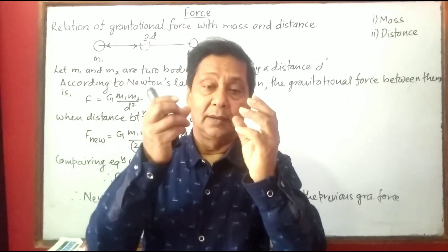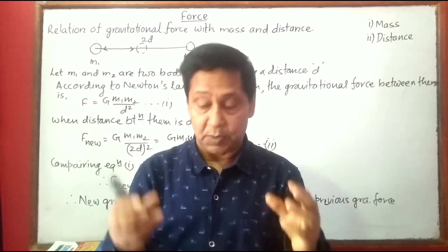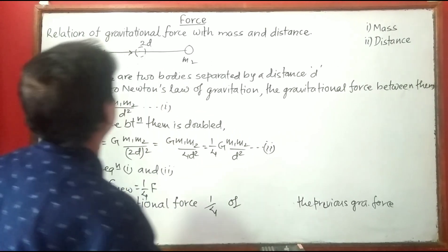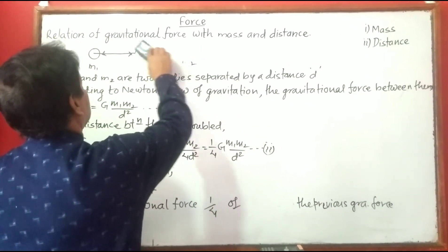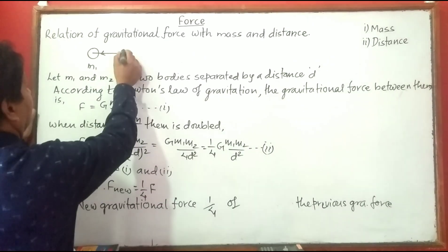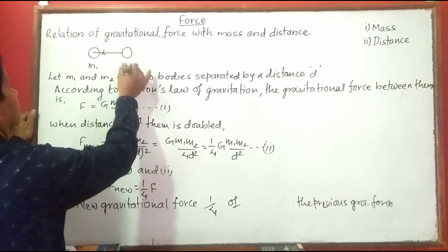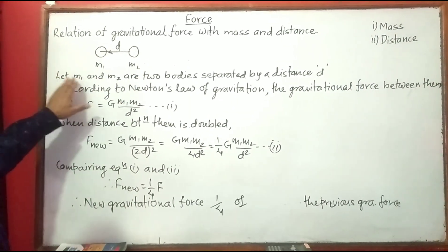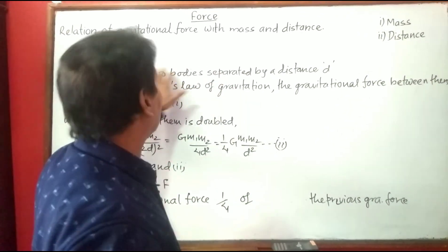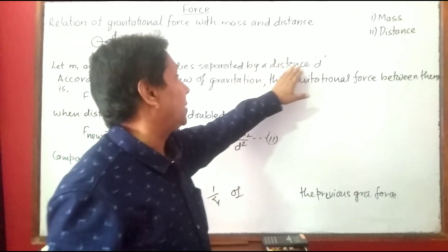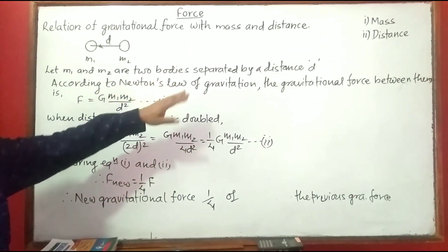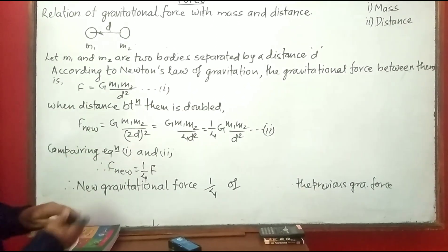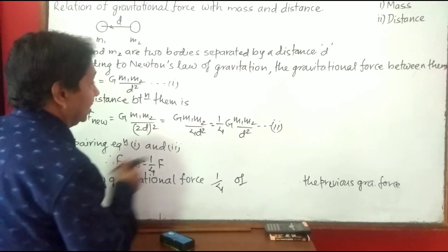Next: what will be the change in gravitational force between two bodies when the distance between them is halved? If the distance between them is reduced to half, then they come close to each other. Let m1 and m2 are two bodies — maybe heavenly, may not be — separated by a distance d. According to Newton's law of gravitation, the gravitational force between them is the same formula as before. Now, when distance between them is not doubled but halved, what happens?